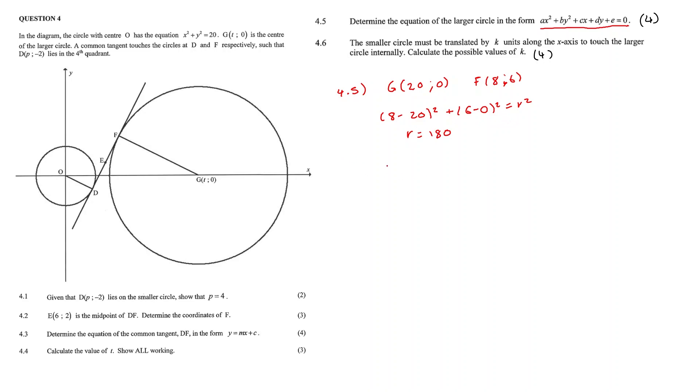We then have our r squared value. We can use our equation of the circle being x minus 20, as that's the x coordinate of the center of the circle, plus y squared, as it's 0 for our G value, is equal to 180. Now, since we wanted in this form, ax squared plus by squared plus cx plus dy plus e,